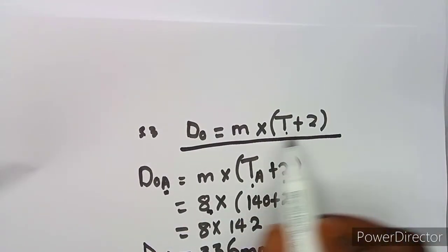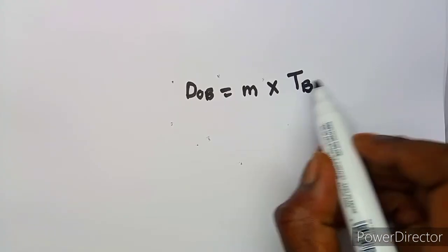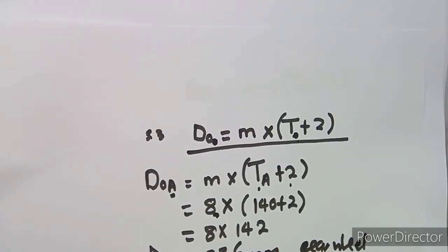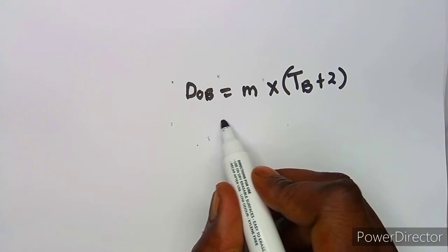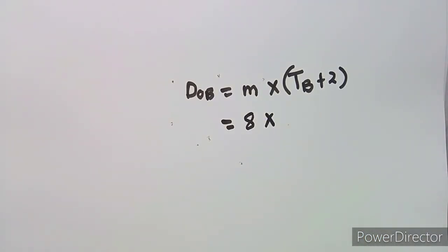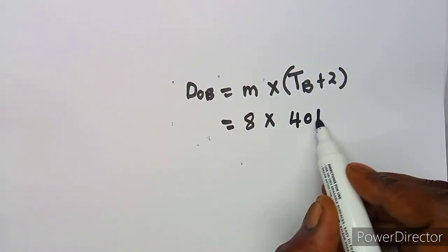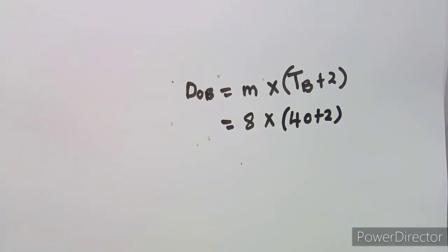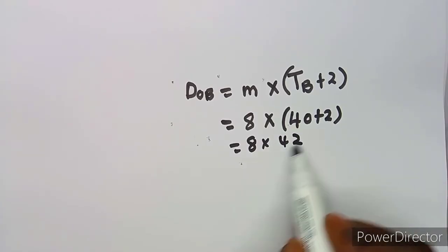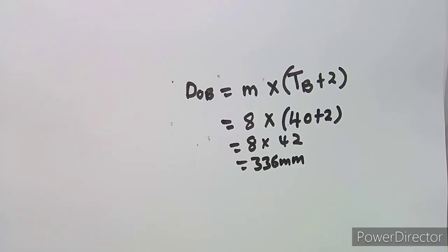Using the same formula for pinion B: OD_B = M × (T_B + 2) = 8 × (40 + 2) = 8 × 42 = 336 millimeters. That is the outside diameter for the pinion.